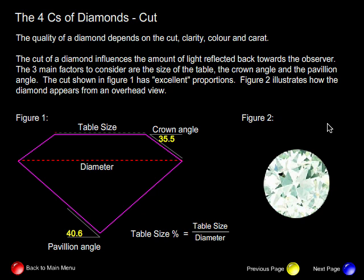Let's now try to understand the four C's of diamonds. To begin with, cut. The quality of a diamond depends on the cut, clarity, color, and carat. A cut of a diamond includes the amount of light reflected back towards the observer. Three main factors to consider: the size of the table relative to the diameter, called the table size percentage, the crown angle, and the pavilion angle.